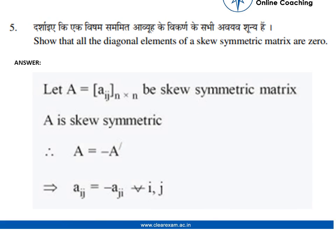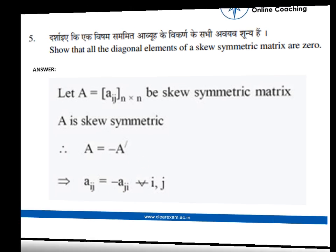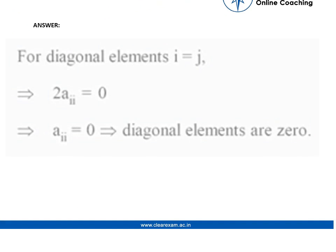The elements satisfy A_ij equals minus A_ji. For diagonal elements, we know i equals j, so it becomes A_ii equals minus A_ii, which gives 2·A_ii equals 0, and therefore A_ii equals 0.